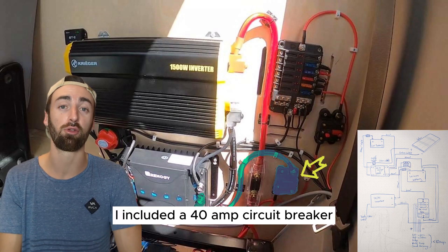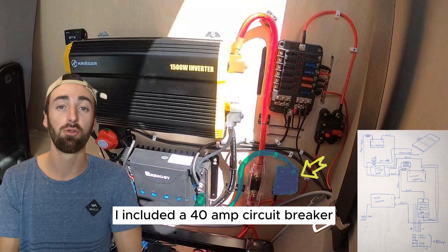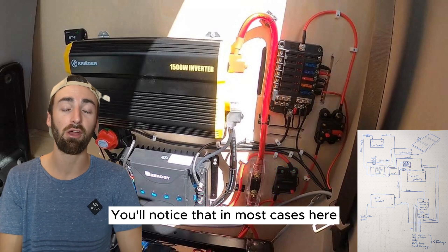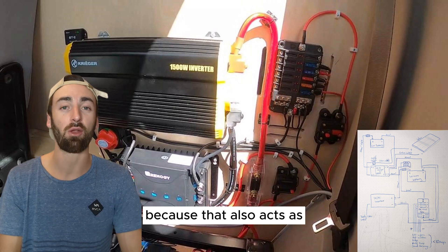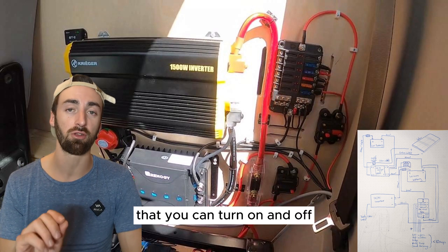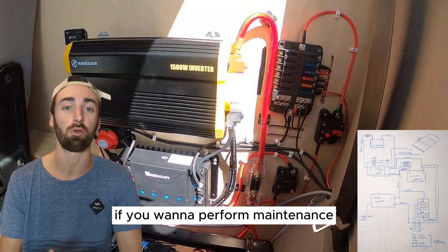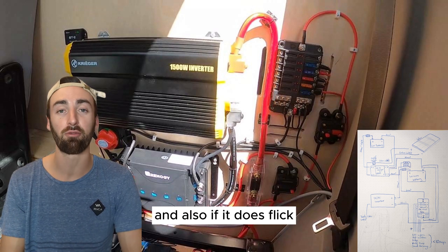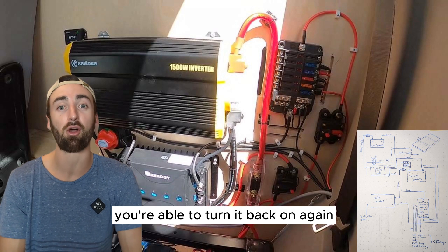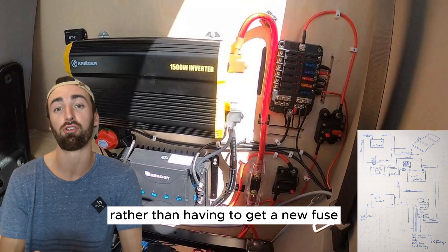On that positive line I included a 40 amp circuit breaker. You'll notice that in most cases here I've used circuit breakers instead of fuses because that also acts as kind of a switch that you can turn on and off to if you want to perform maintenance or check anything with your system and also if it does flick you're able to turn it back on again rather than having to get a new fuse.